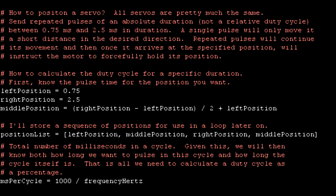In order to convert our absolute pulse times to a percentage of duty cycle, we need to know how many milliseconds there are per cycle. The formula for that is to divide 1000 by our frequency in Hz as specified in the constructor of our PWM object.